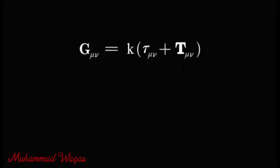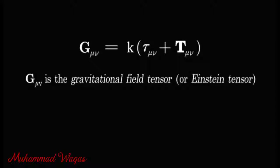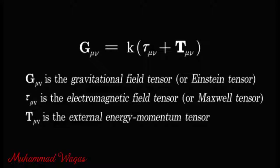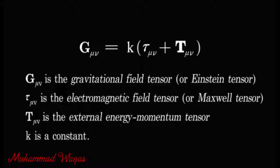This equation is defined as follows: G_μν represents the ten second-order partial differential equations of gravitation for the four-dimensional space-time world, called the gravitational field tensor or the Einstein tensor. F_μν represents the six second-order partial differential equations of electromagnetism for the four-dimensional space-time world, called the electromagnetic field tensor or the Maxwell tensor. T_μν is the final tensor representing all the remaining mass or energy of space produced by uncharged matter, called the external energy-momentum tensor. And K is the constant that includes the gravitational constant and all other related terms.